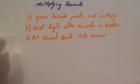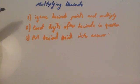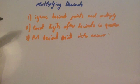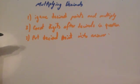In this video we are going to look at multiplying decimals. Whenever I am multiplying decimals I follow three steps. Step one, I ignore the decimal points and multiply out the numbers. Then step two, I count the digits after the decimal points in the question, and then in the answer it must be the same. Then step three, I put the decimal point into my answer and that should be right.